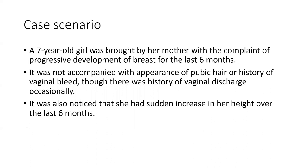Let's start with scenario number one, the detailed scenario. We have a 7-year-old girl brought by her mother with complaints of progressive development of breast for the last 6 months. It was not accompanied by pubic hair or vaginal bleeding, although there was a history of vaginal discharge occasionally — always ask about vaginal discharge. There was also a sudden increase in her height over the last 6 months, noted specifically by the mother.